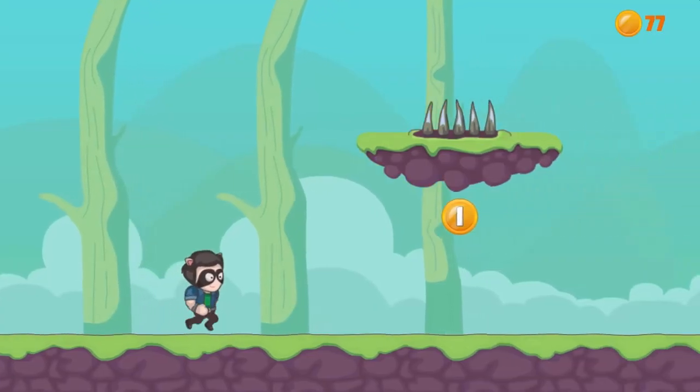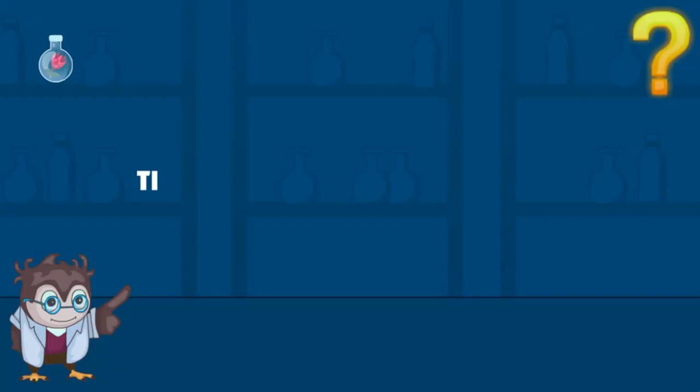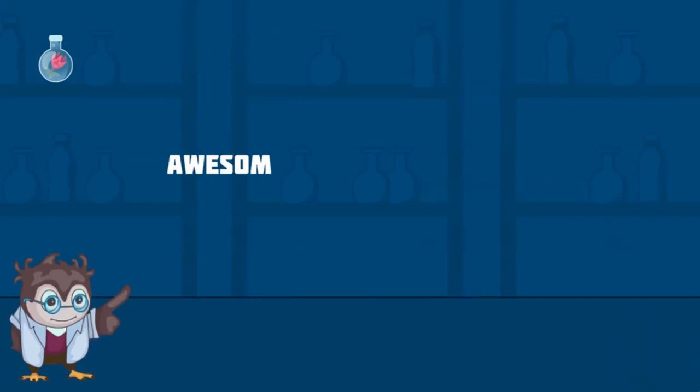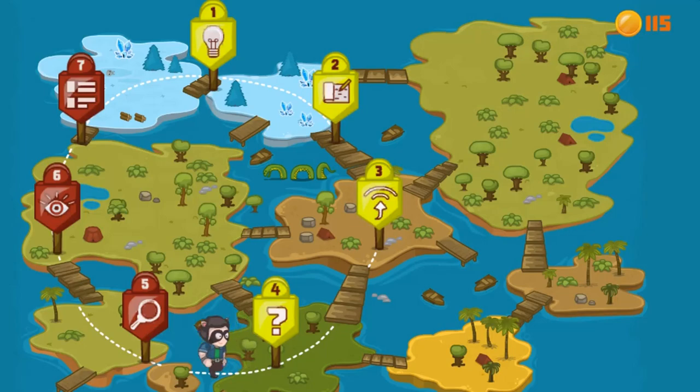Help the raccoon collect all the gold coins during each stage of the design process. Each stage will require you to click with the mouse to select items or to jump to collect more gold coins to progress further.